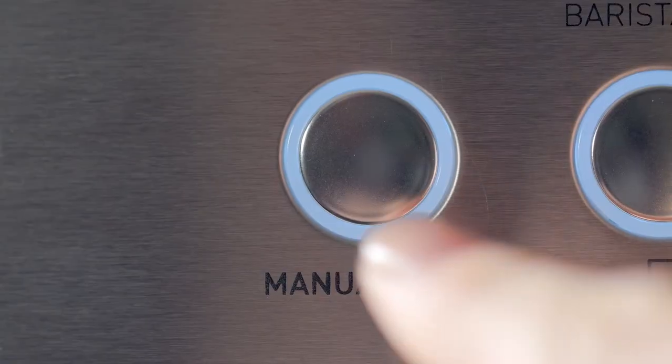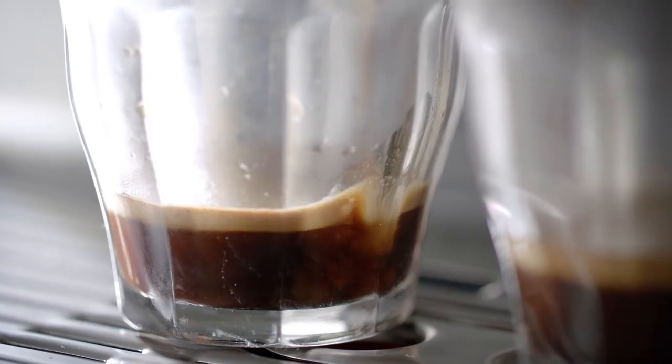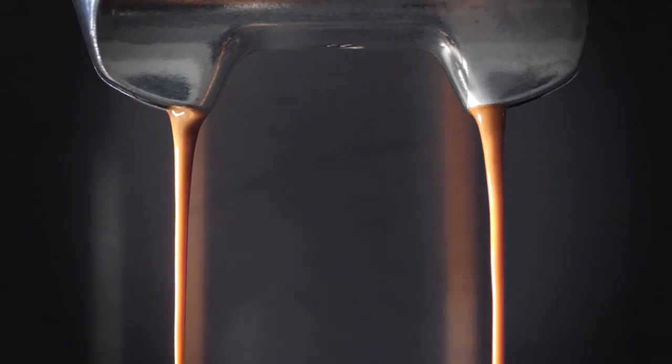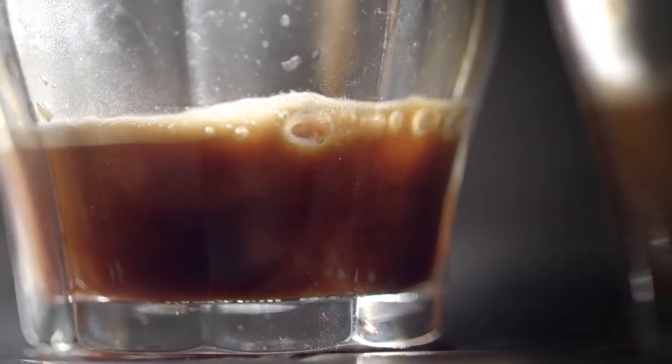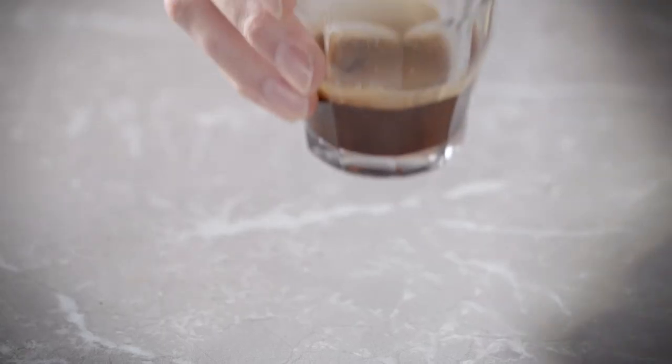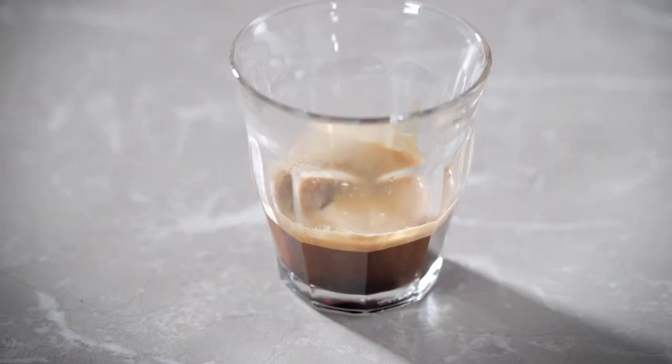Alternatively, you can choose manual shot to control the volume according to your taste. A well extracted espresso will have a rich caramel color with a dark golden crema. The extraction time should take between 20 to 30 seconds for both 1 and 2 cup shots.